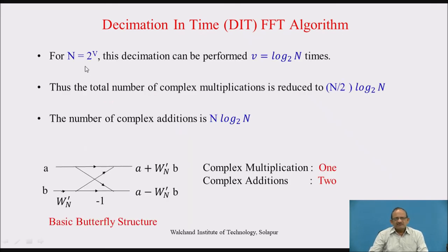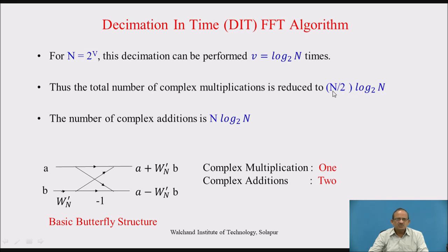For N equal to 2 raised to v, this decimation can be performed v times, where v equals log₂(N). The total number of complex multiplications is reduced to (N/2)·log₂(N), because there are N/2 multiplications for each step. The number of complex additions will be N·log₂(N). These calculations can be understood from the butterfly structure.